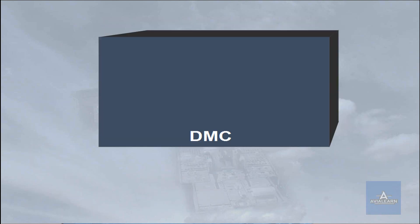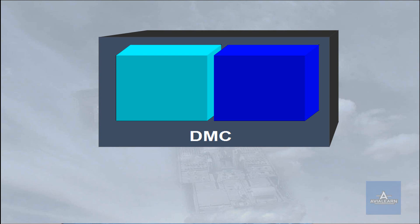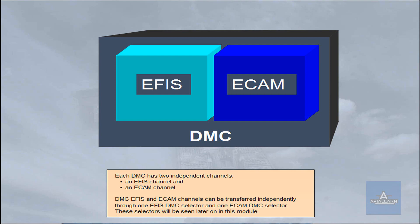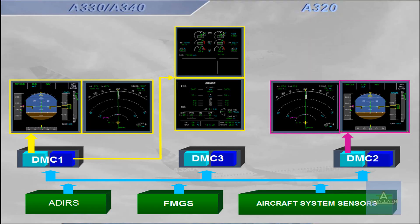Each DMC has two independent channels: an EFIS channel and an ECAM channel. DMC EFIS and ECAM channels can be transferred independently through one EFIS DMC selector and one ECAM DMC selector. These selectors will be seen later on in this module. In normal operations, DMC 3 is used as backup. Note: each DMC is able to simultaneously drive one PFD, one ND and the ECAMs.